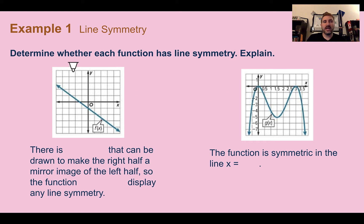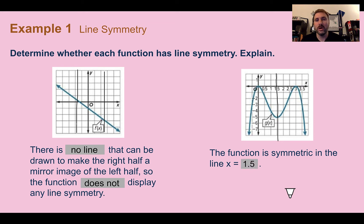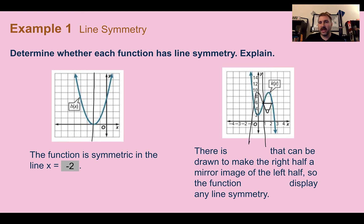For the first one, there's no line we can draw to make the right half a mirror image of the left half, so this does not have any line symmetry. For the second one, there is a place where we could draw a line where if I were to flip one side over that line, it would line up exactly on the other. So this one has line symmetry on the line x equals 1.5. For the third one, yes, it's symmetric — it would be on that line x equals negative 2. And this last one, if we were to cut it in half, you might think there's some symmetry, but if we flip it, it is not symmetrical. This does not have any line symmetry.